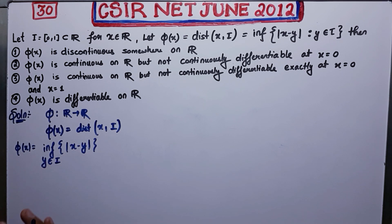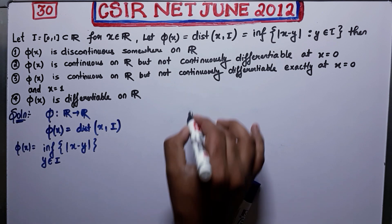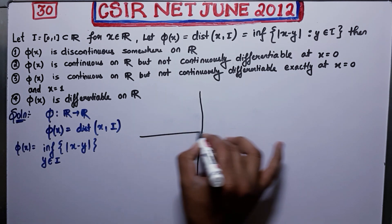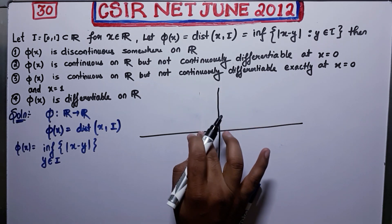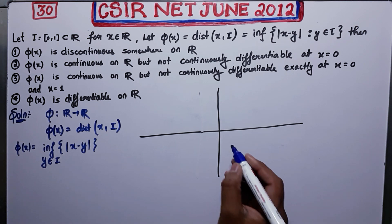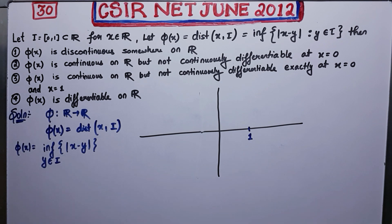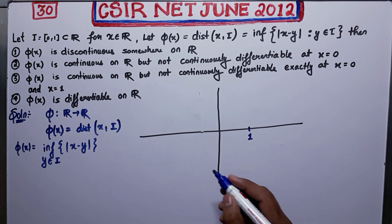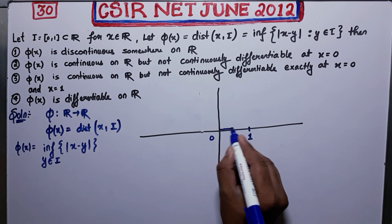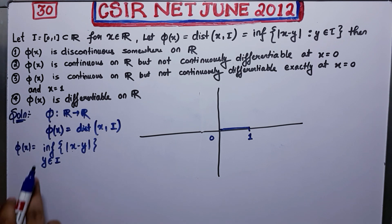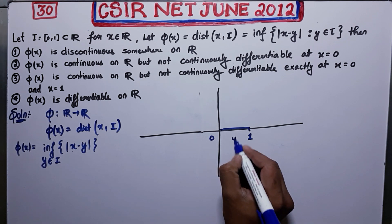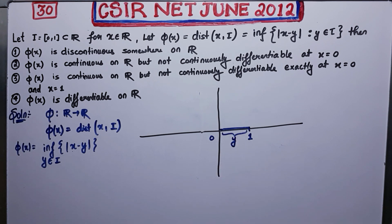In order to solve these type of questions, firstly you should draw the graph. Let us suppose this is my coordinate x-axis. Now see where is your [0,1] interval. Let us say this is point one and this is zero — so this interval is your [0,1] interval. φ(x) is the infimum of the distance between x and y where y belongs to I, so y is somewhere here in this region.